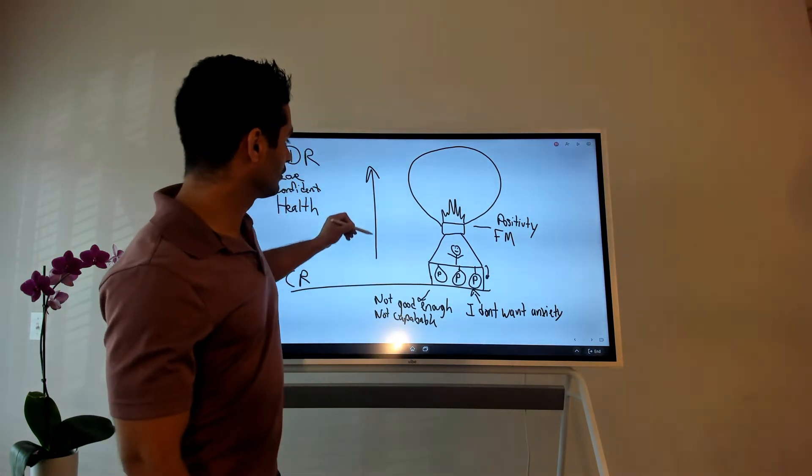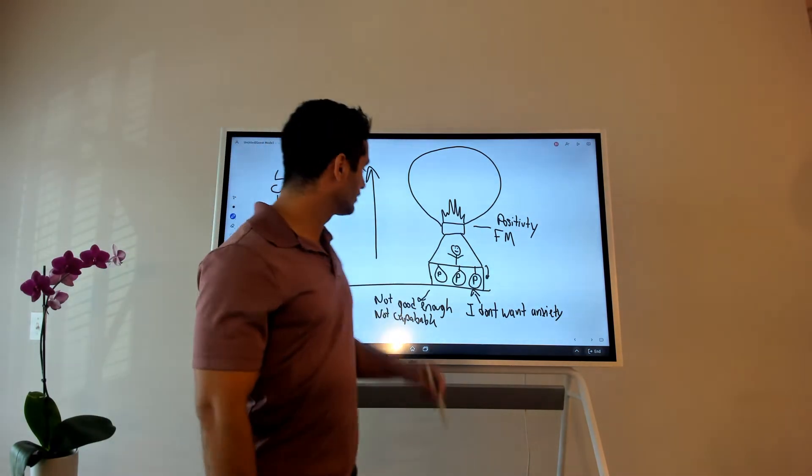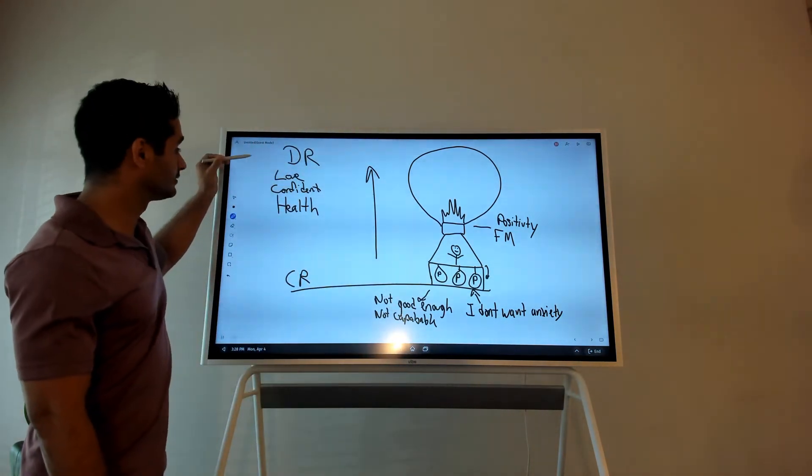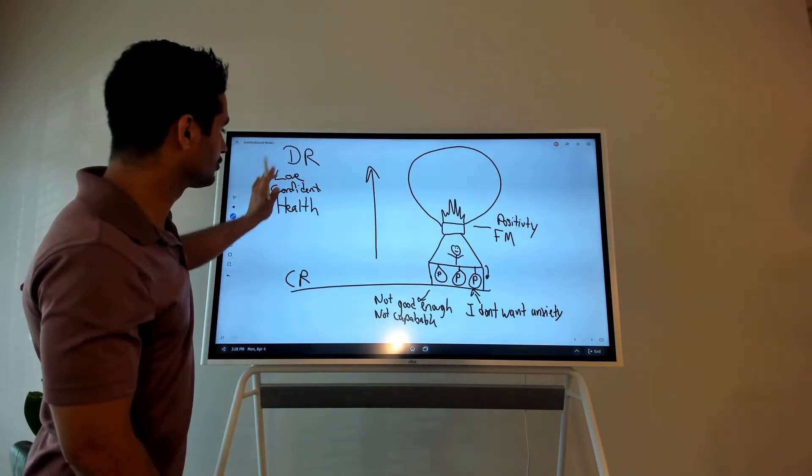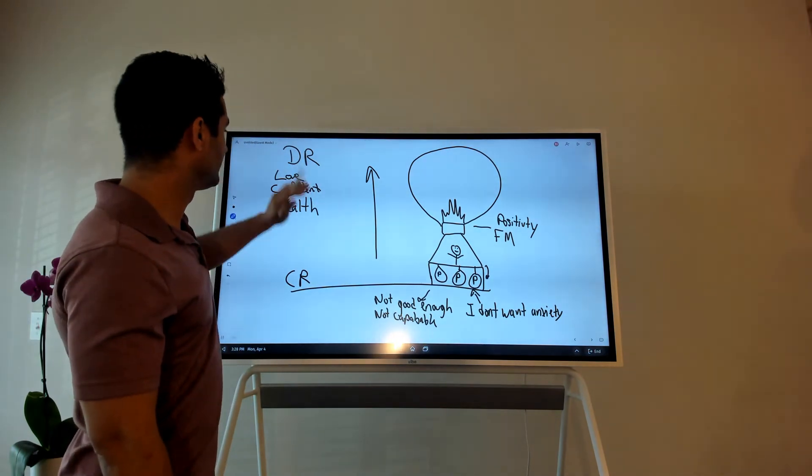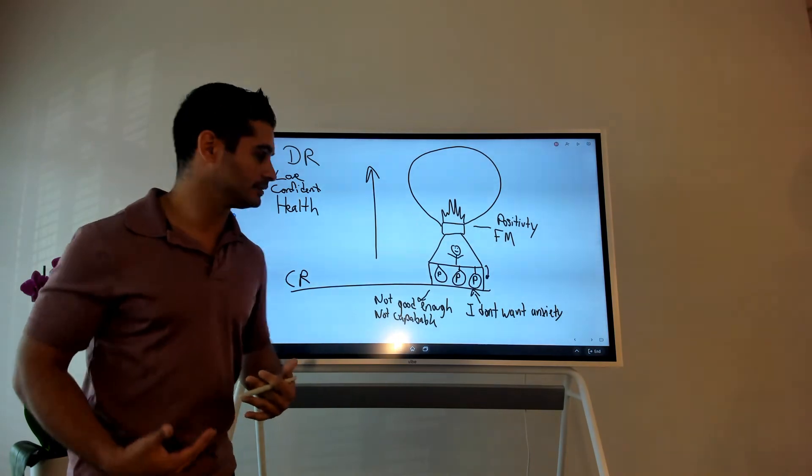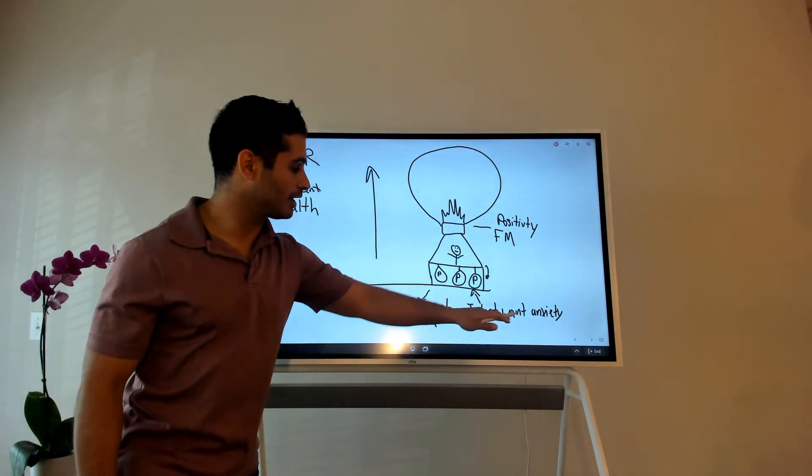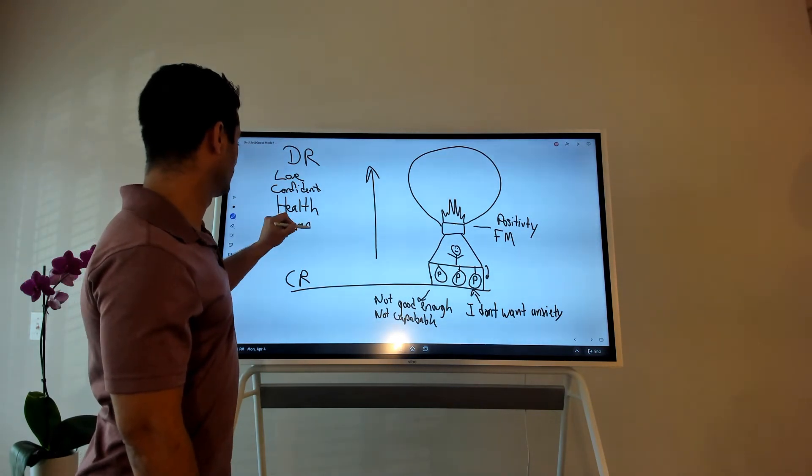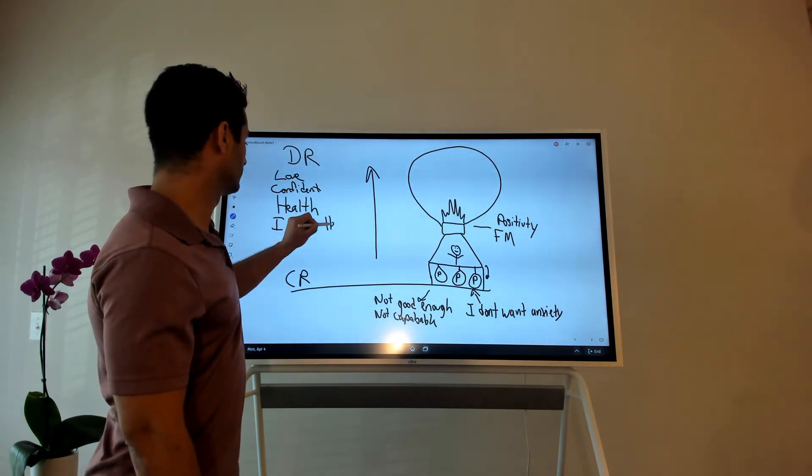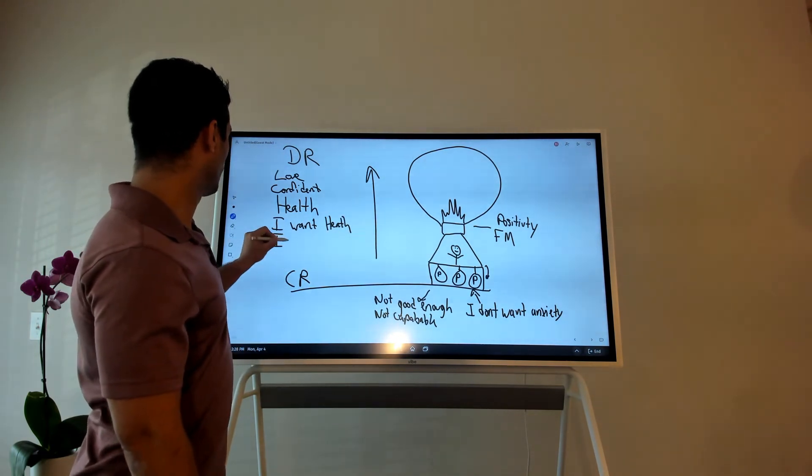Take that weight off your back and by taking the weight off your back, you slowly float up, slowly float up to what your desired reality is, whether it's love, confidence, and health. And here in your desired reality that you're floating up to, these are things that you want. You communicate to your body what it is that you want. So here we had I don't want anxiety. You communicate to your body that I want health, right, or I want the fitness level of a fighter.